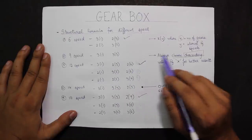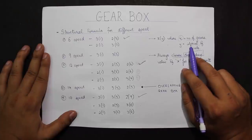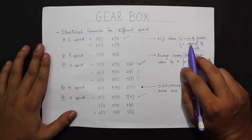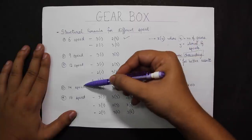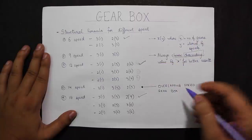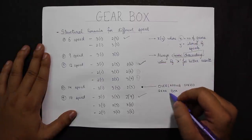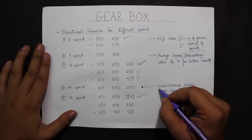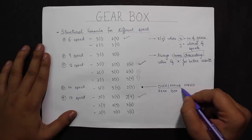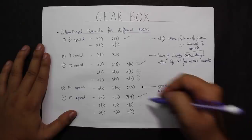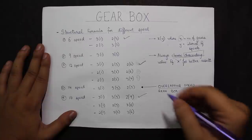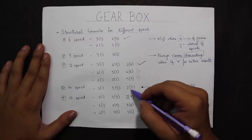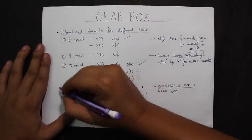Unless it is specified otherwise in the question, use the descending-order rule. An exception is the 14-speed gearbox, which is achieved by making an 18-speed gearbox with 4 overlapping speeds. As you solve questions you will learn more about the 14-speed special case.